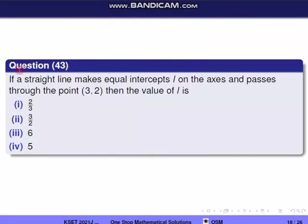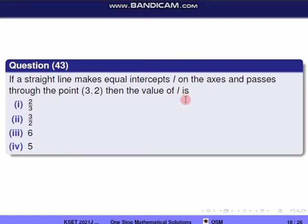Next question, question 43. If a straight line makes equal intercepts L on both axes and passes through the point (3, 2), then find the value of L.